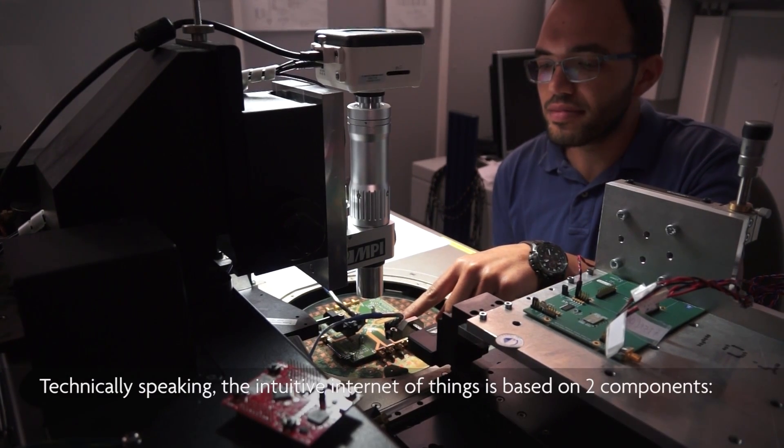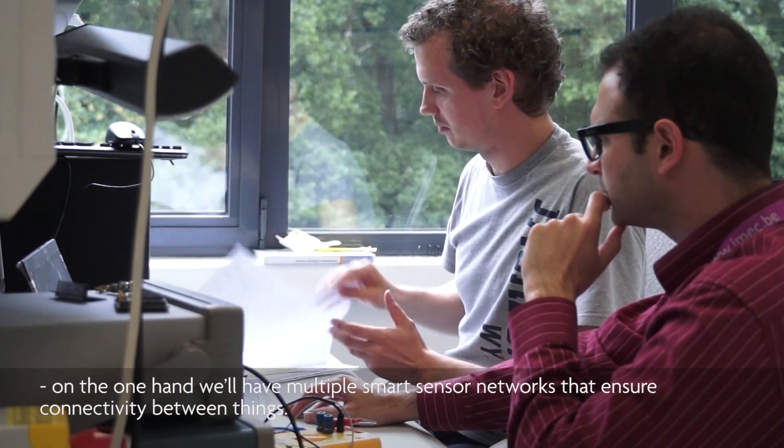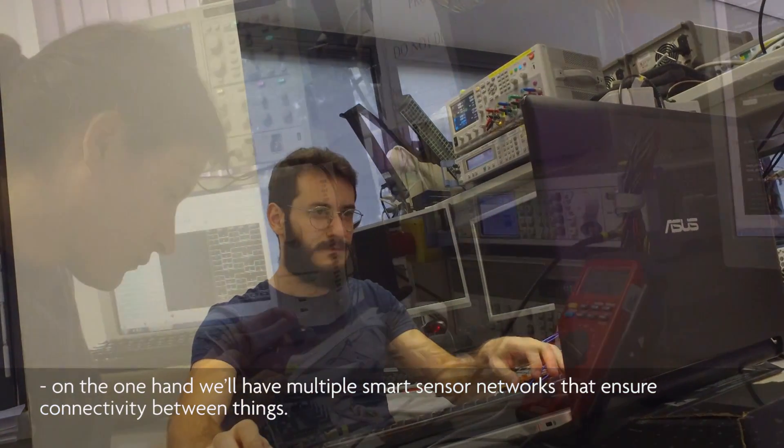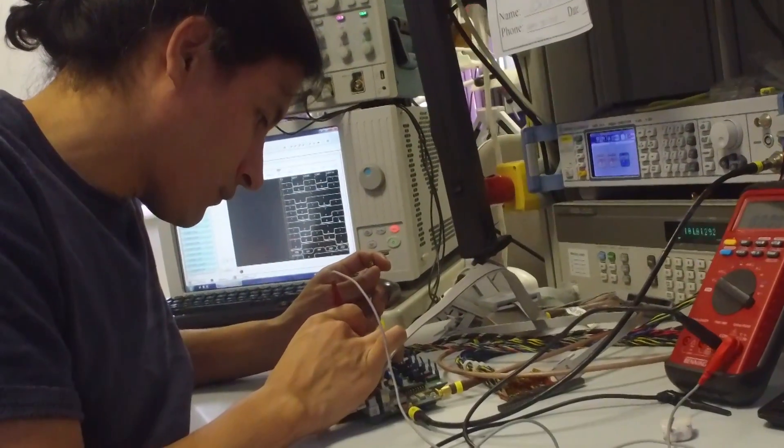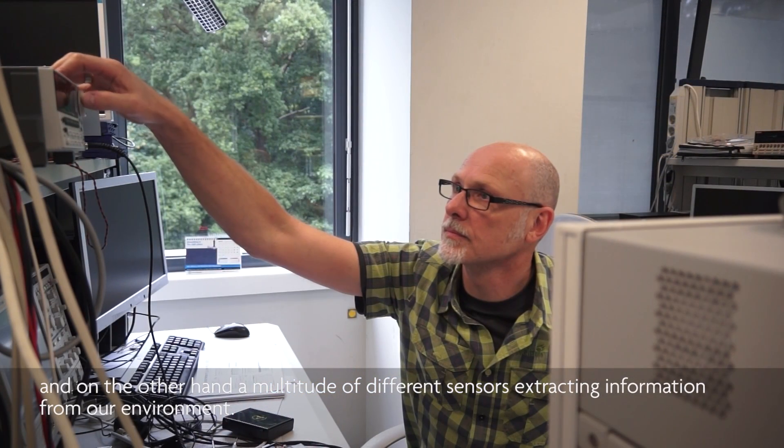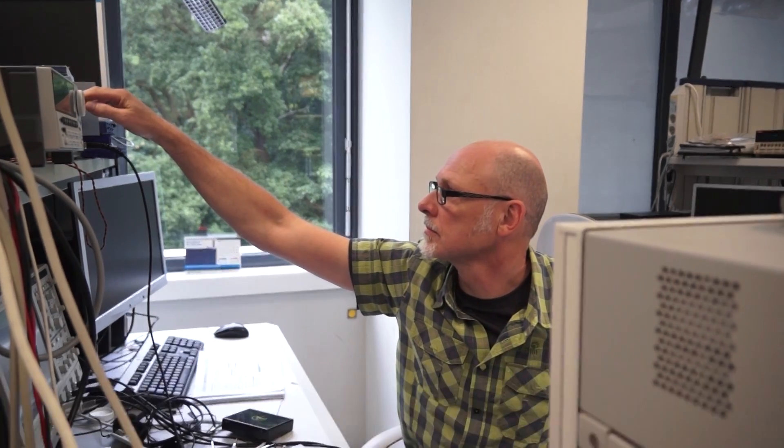Technically speaking, the intuitive Internet of Things is based on two components. On the one hand we'll have multiple smart sensor networks that ensure connectivity between things, and on the other hand, a multitude of different sensors extracting information from our environment.